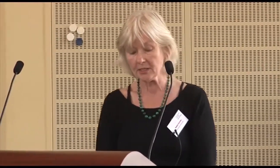Let's take the case of Thomas. His teacher has assessed his abstract reasoning skills every year, and at age 16, Thomas still does not show any sign of development. Based on the general graph, we may expect that Thomas should show at least some development. Of course, we know that some children are ahead of others in development, but Thomas seems to have an exceptional and atypical growth pattern. But is that really true? Can we make assumptions about individual development based on the knowledge of average group data? In fact, we cannot.